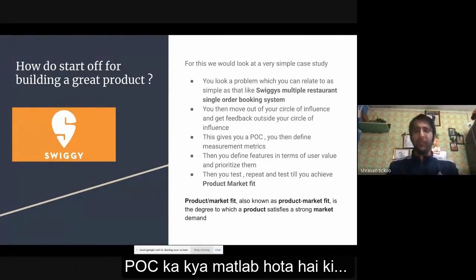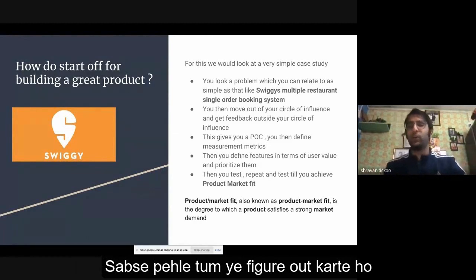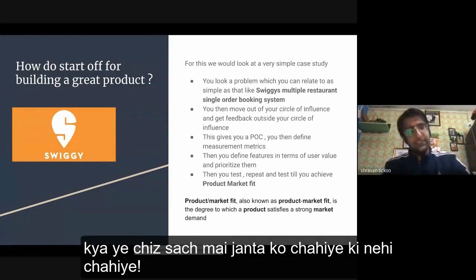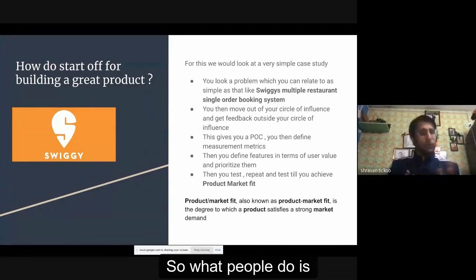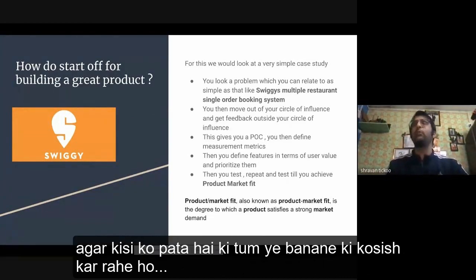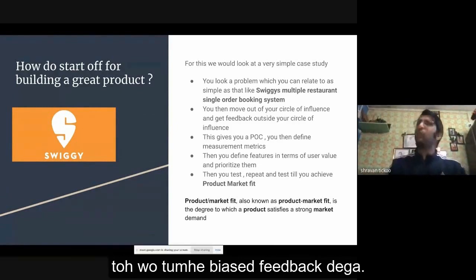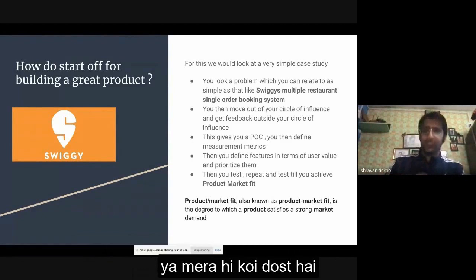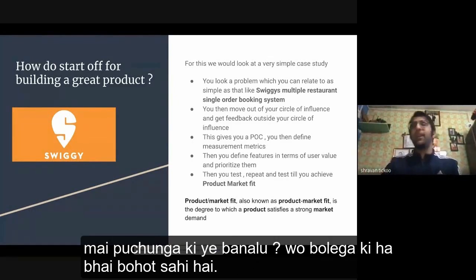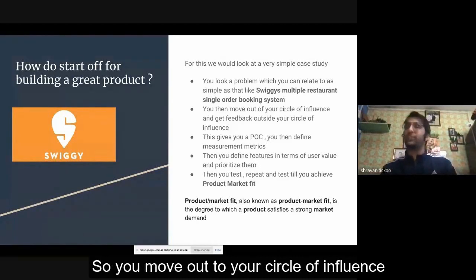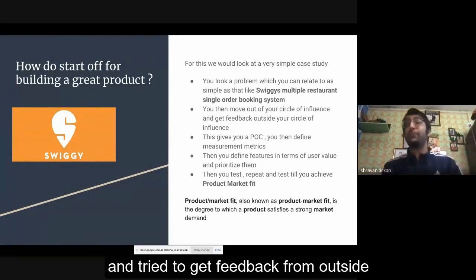You think of a POC. POC means first you figure out whether there is actually demand for this — does the public really want it or not? What people do is they go outside their circle of influence. Circle of influence means if someone already knows you are trying to build this, they will give you biased feedback. Like if it's your close friend, he'll say 'yes bhai, it's good, you should make it.' So you move out of your circle of influence and try to get feedback from outside.